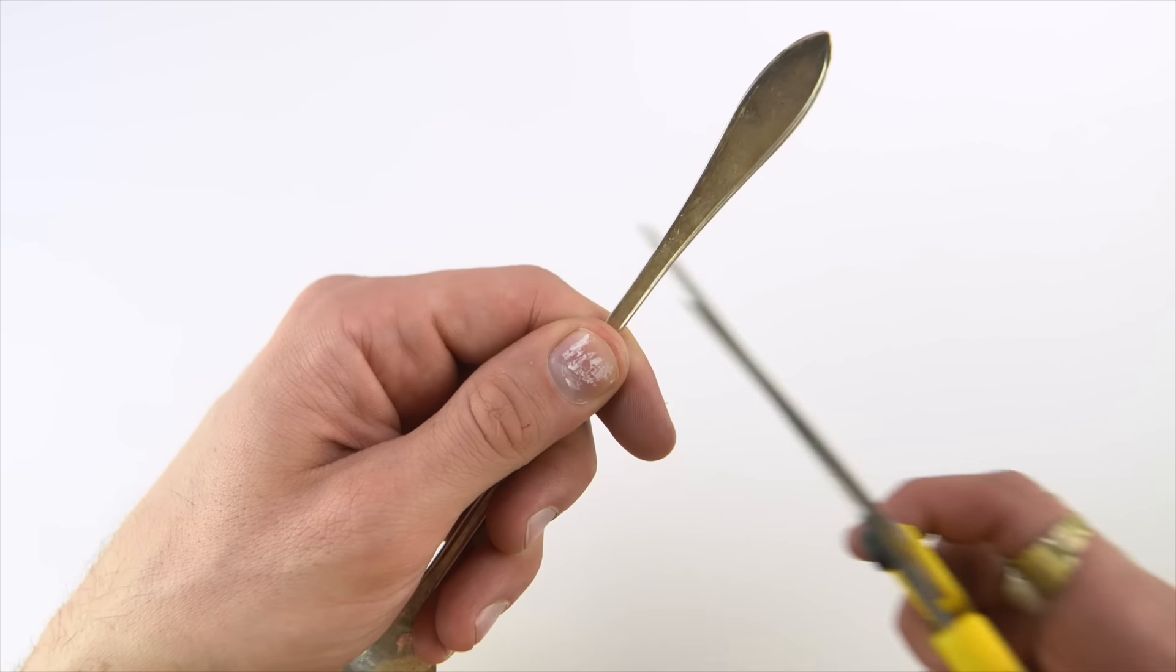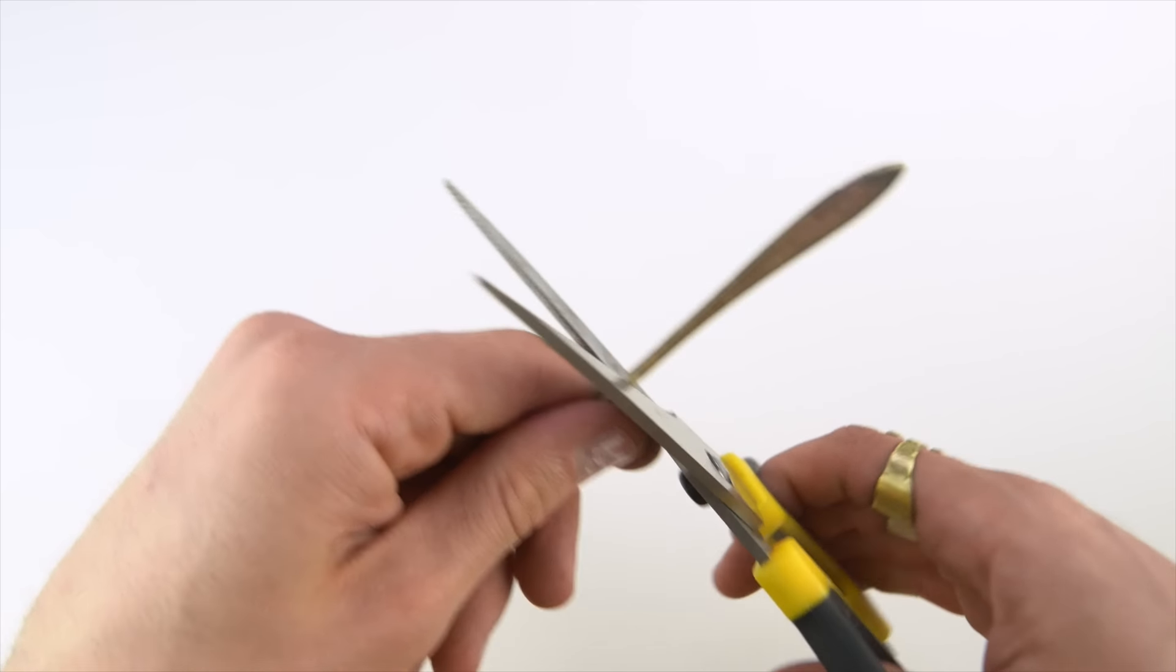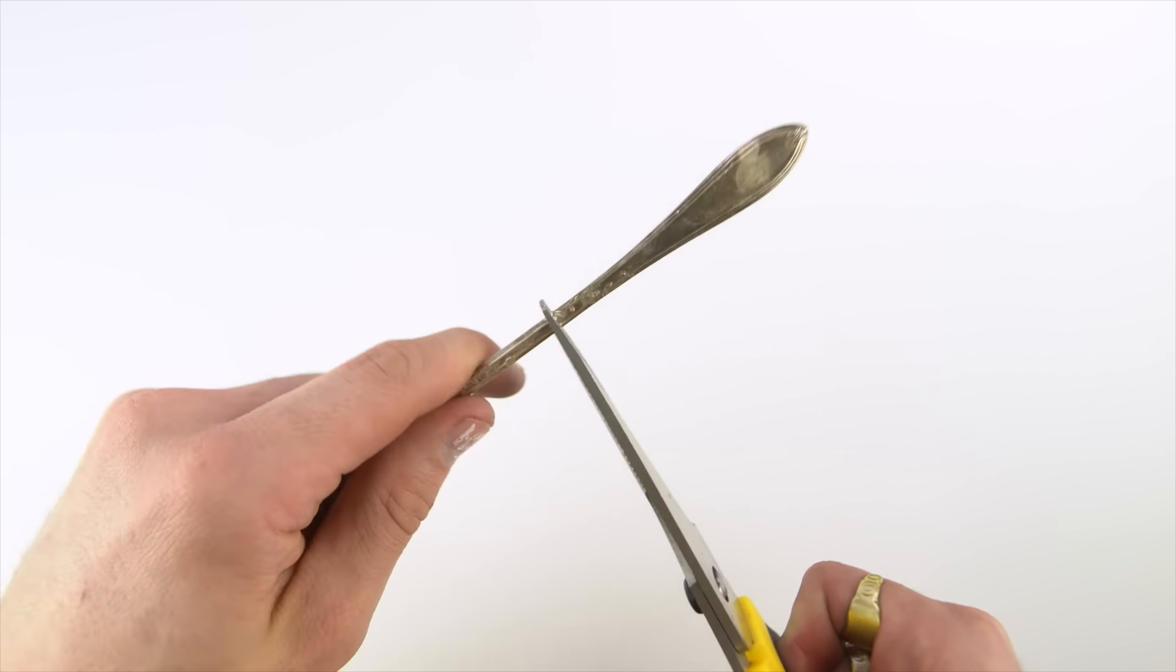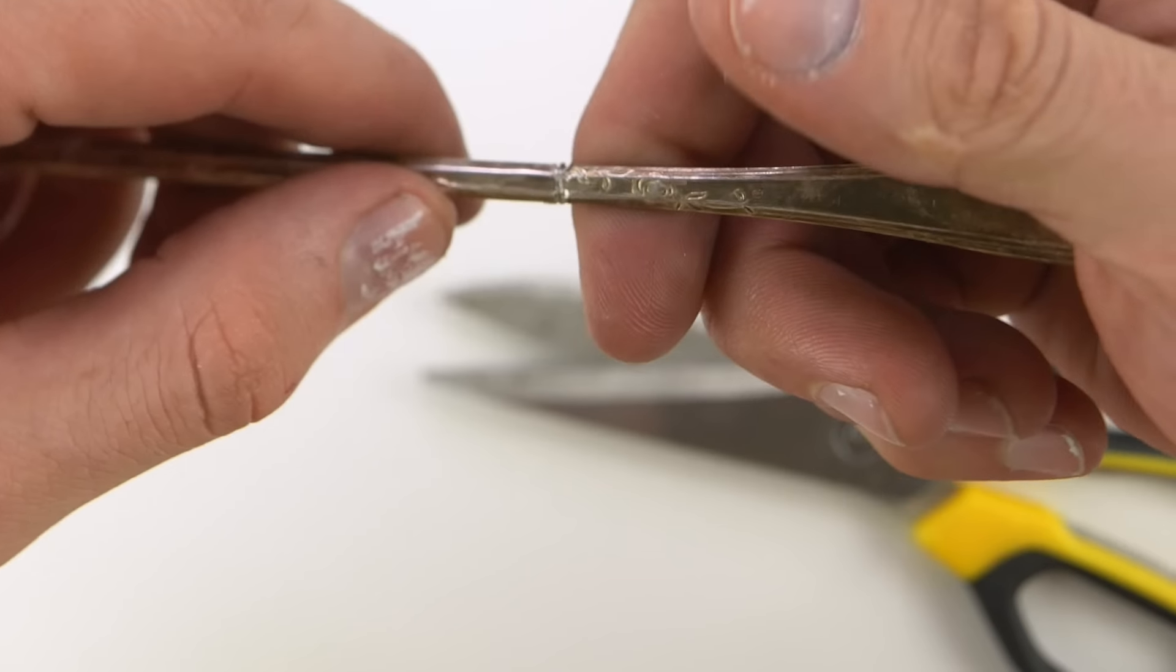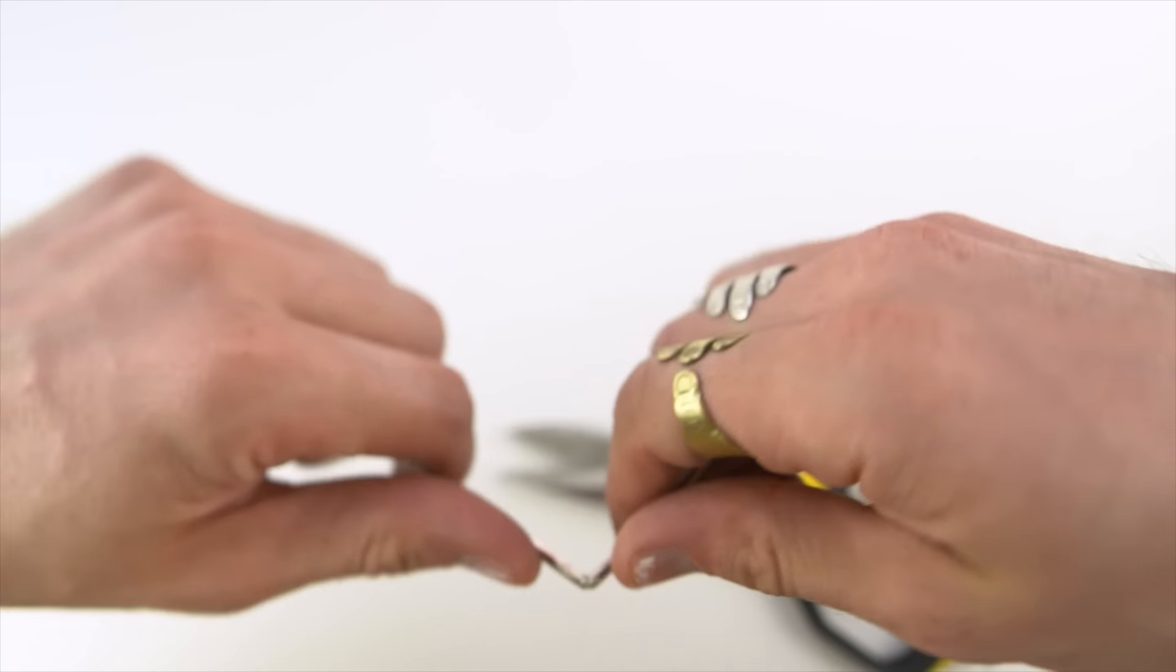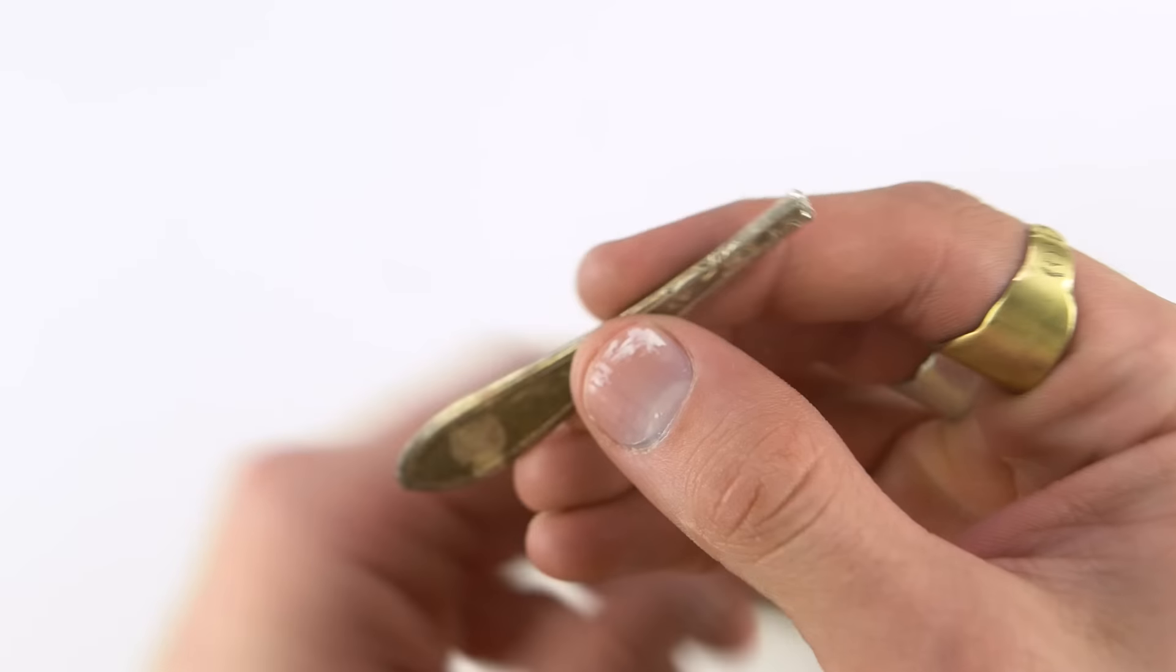Alright, so I measured out just roughly how big I wanted it on my finger, took some scissors and tried to cut it. Thought this would cut right through, didn't really work. Ended up bending it and it broke right where I had the little score marks from the scissors, so that worked.